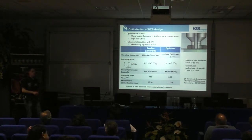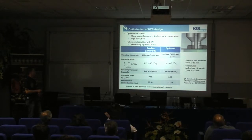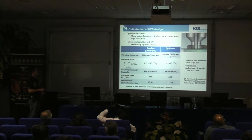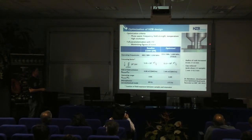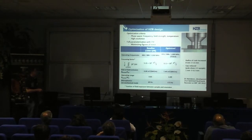What are the optimization criteria? The phase space has to be maximized in frequency, field level, and temperature, and we want to obtain a high resolution. Therefore, the dimensions of the quadruple rods have been changed — the thickness of the rods and of the pole shoes, and the distance between the pole shoes and the sample has been varied. The frequencies have been adapted just by shortening the rods.